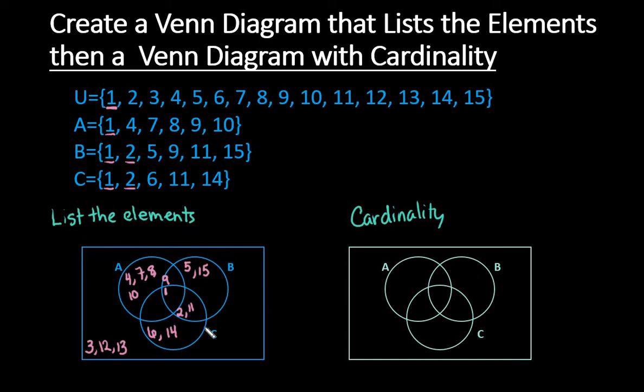Okay, so this is what it would look like to list out all of the elements. After you're done listing out all the elements of the set, what we're going to do next is we're going to find the cardinality of each of those locations.